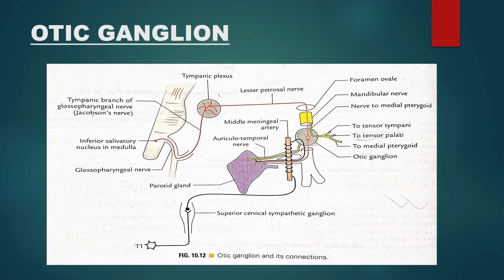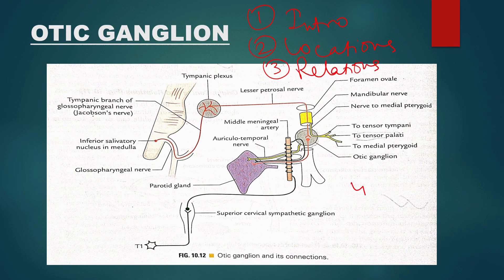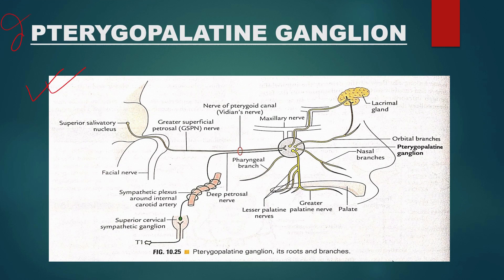For the otic ganglion — and similarly for the pterygopalatine ganglion and other ganglions — you should mention the introductory part, its location, relations, roots, and branches. So the points are: introduction, location, relations, and lastly branches or roots. This is the diagram you should include in your answer for the otic ganglion, and this is the diagram for the pterygopalatine ganglion. This mostly comes as a short note, not a long note. So prepare your answer according to the marks allocated.